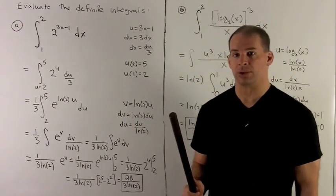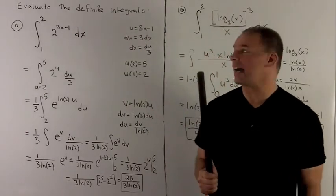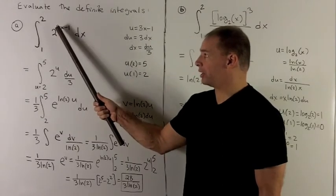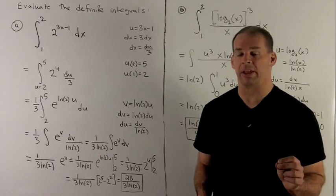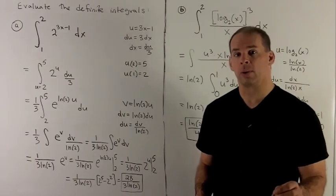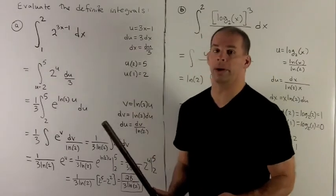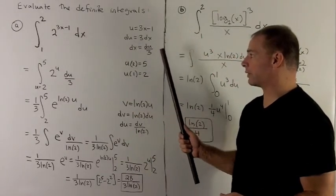So this is going to be a u substitution. I let u be equal to the inside. So here we can think of this as 2 to the u with inside function 3x minus 1. You can think of the inside function as being, when I stick an actual number in there, what's the first thing that I do? We compute 3x minus 1. So if du equals 3 dx, dx equals du over 3.